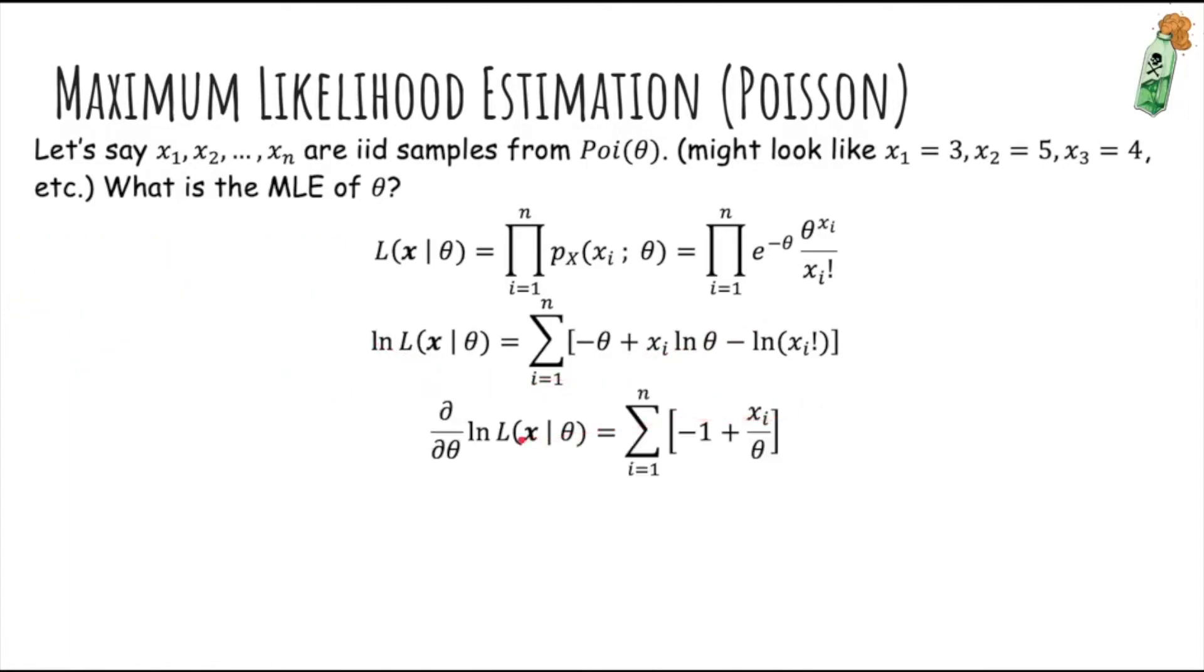Okay, so now we want to take the derivative of the log likelihood with respect to theta. So the derivative of negative theta is just negative 1, and the derivative of log theta is just 1 over theta, so we have xi over theta. Xi is a constant with respect to theta, remember. And now we want to just set the derivative equal to 0 and solve for theta. So now when we're solving for theta, the theta hat is actually the estimate that we solve for.